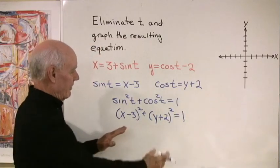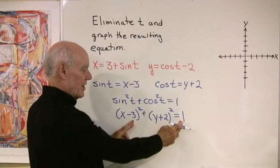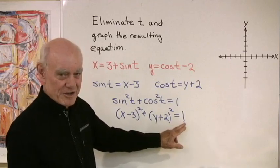So what do I have? Well I have the equation of a circle with a center at 3 negative 2 and a radius of 1. So the square root of 1 is 1, so the radius of that is 1.